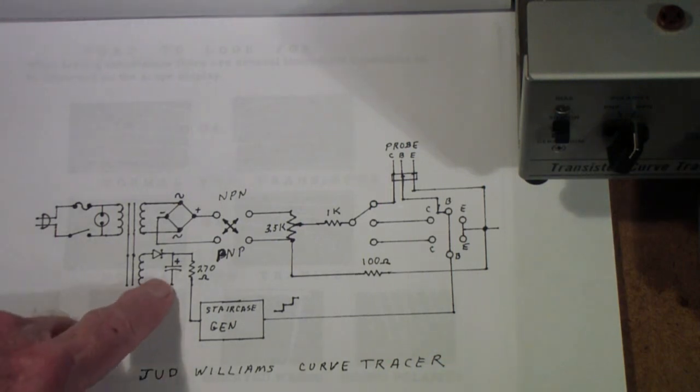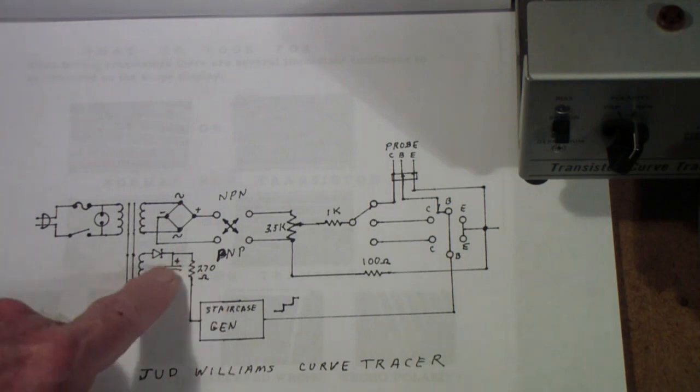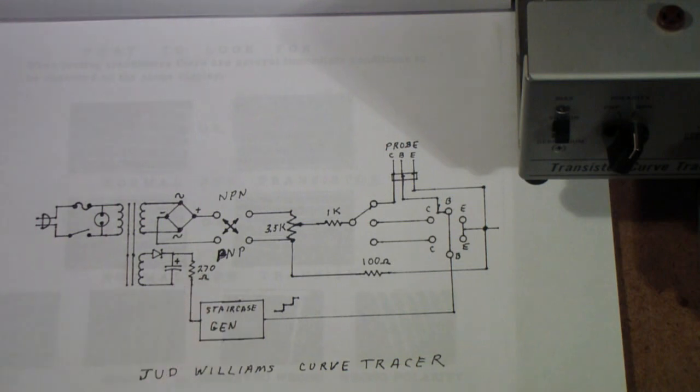What was wrong with this unit was this capacitor had shorted and had taken out this diode along with it. Now, this is actually just a little half-wave power supply, and it provides voltage to the staircase generator. So I replaced the capacitor and the diode. It's now working fine. The 270-ohm resistor did not require replacement.